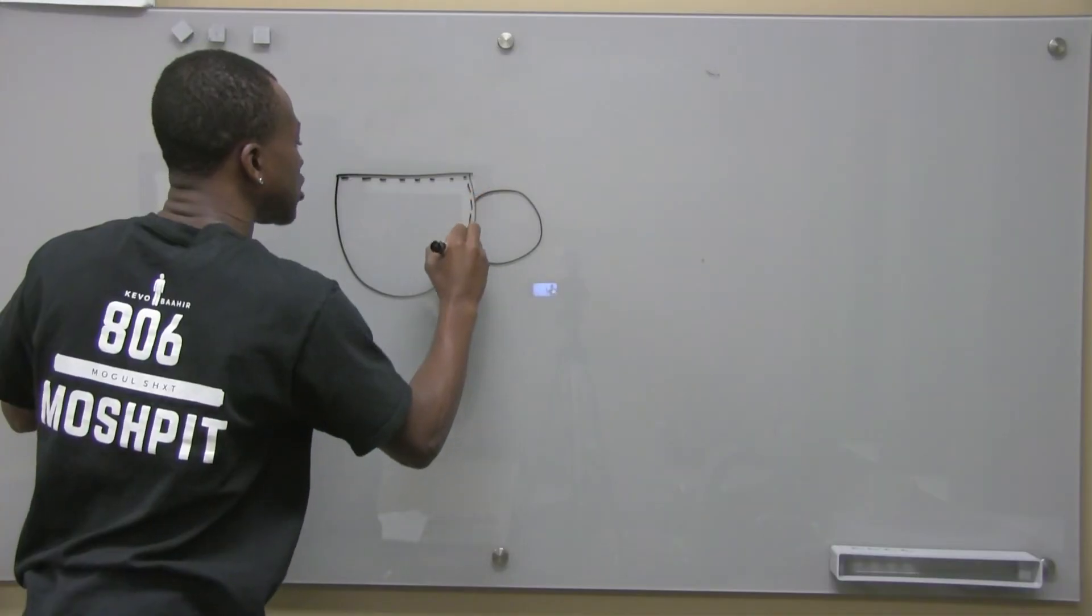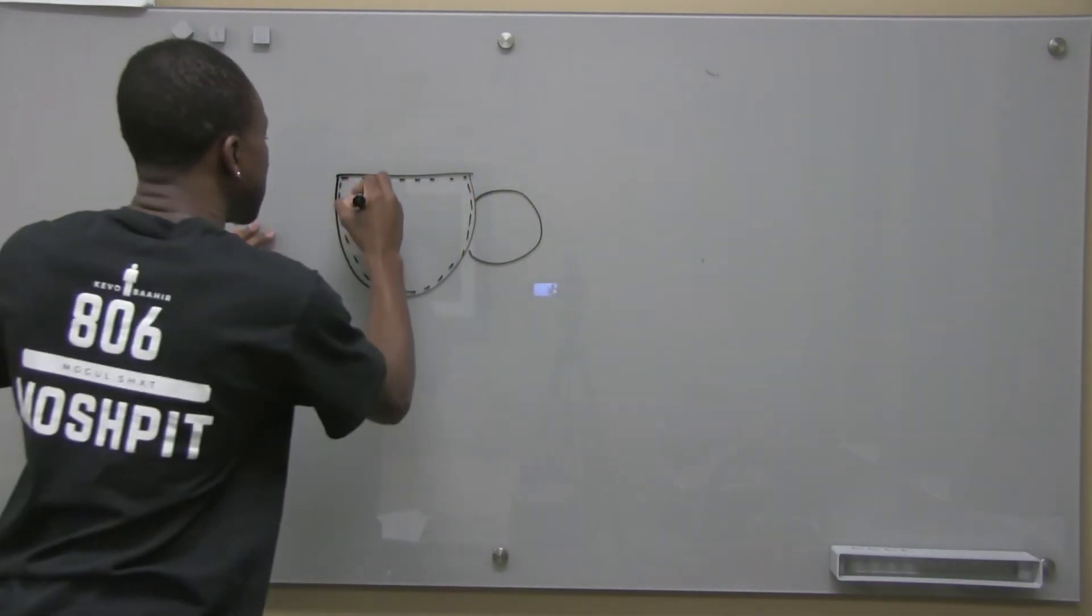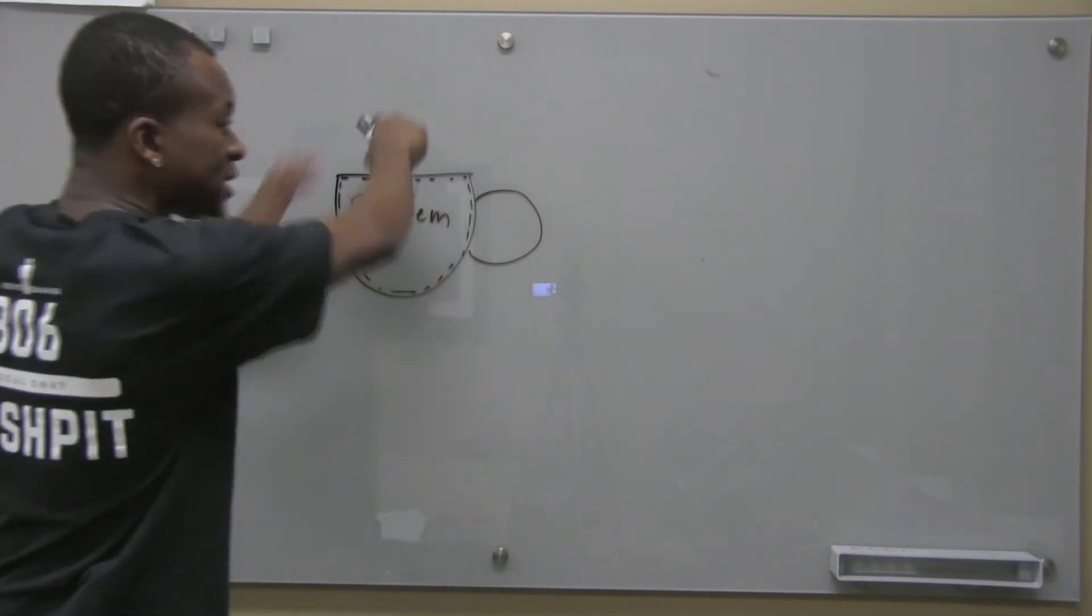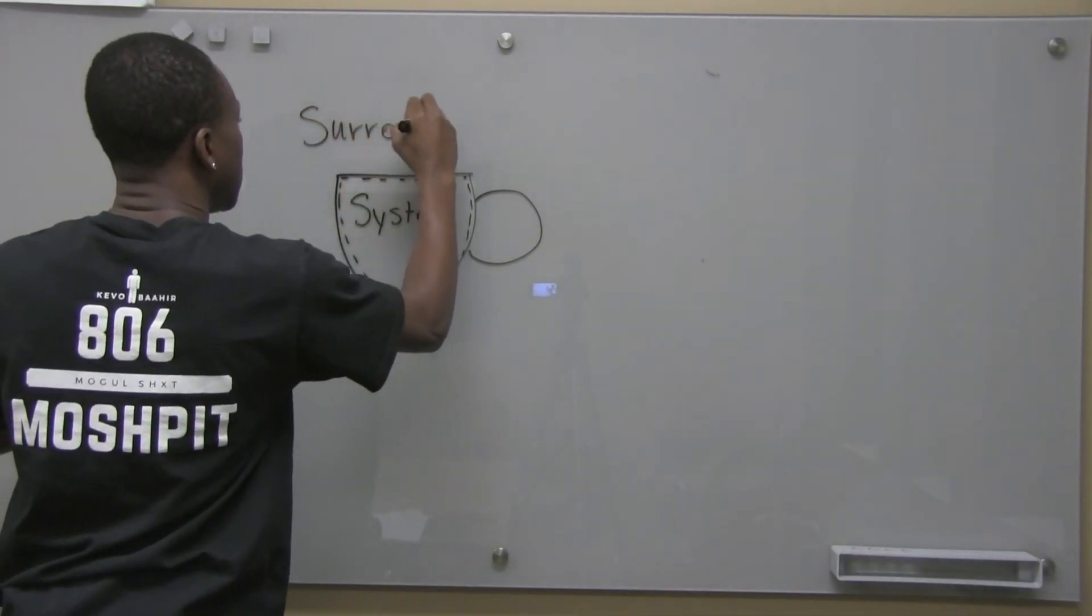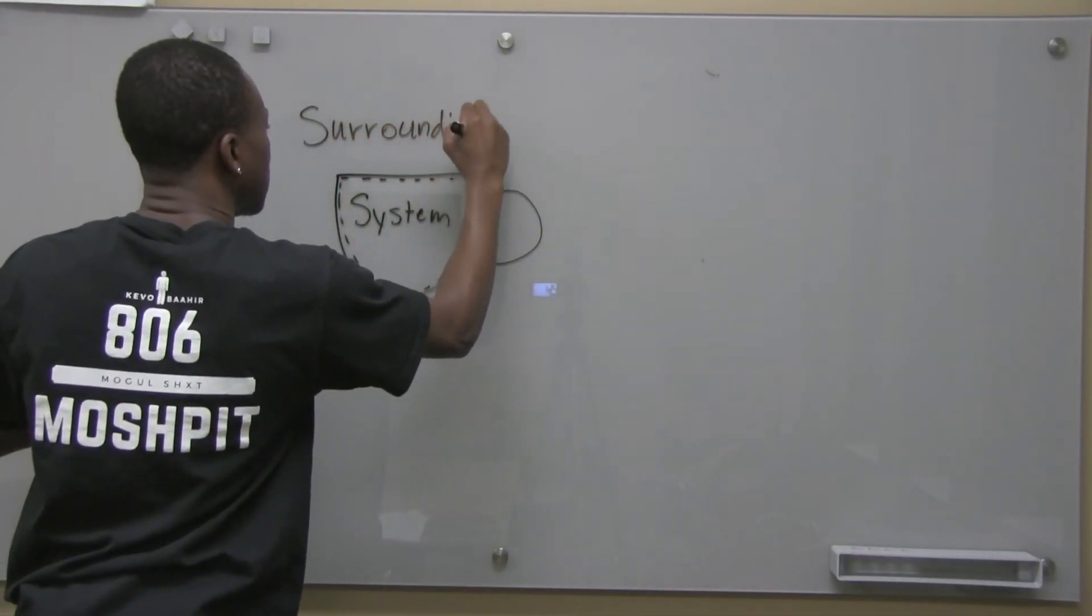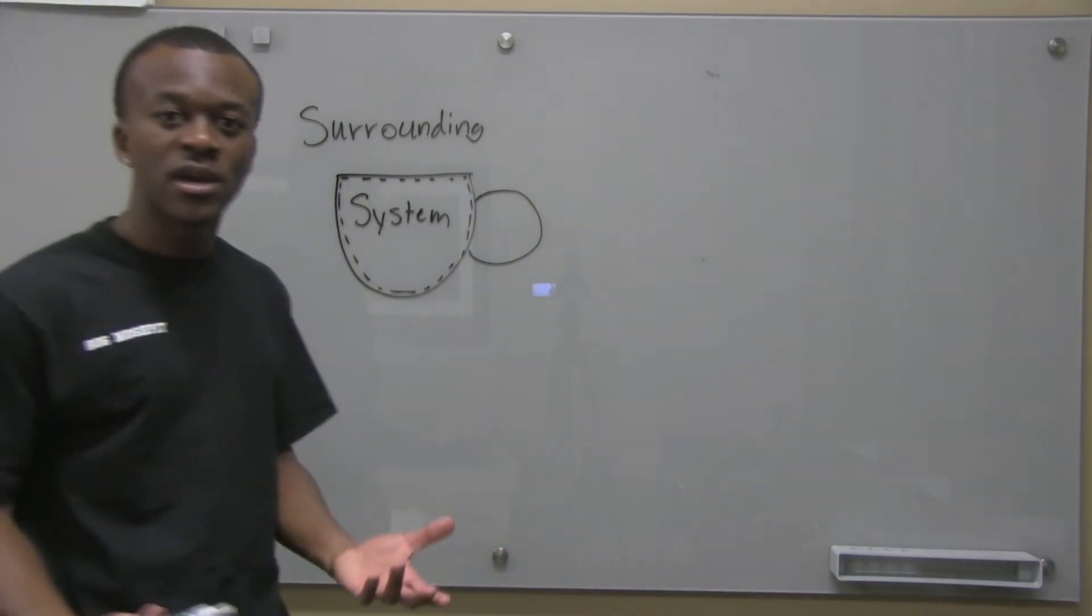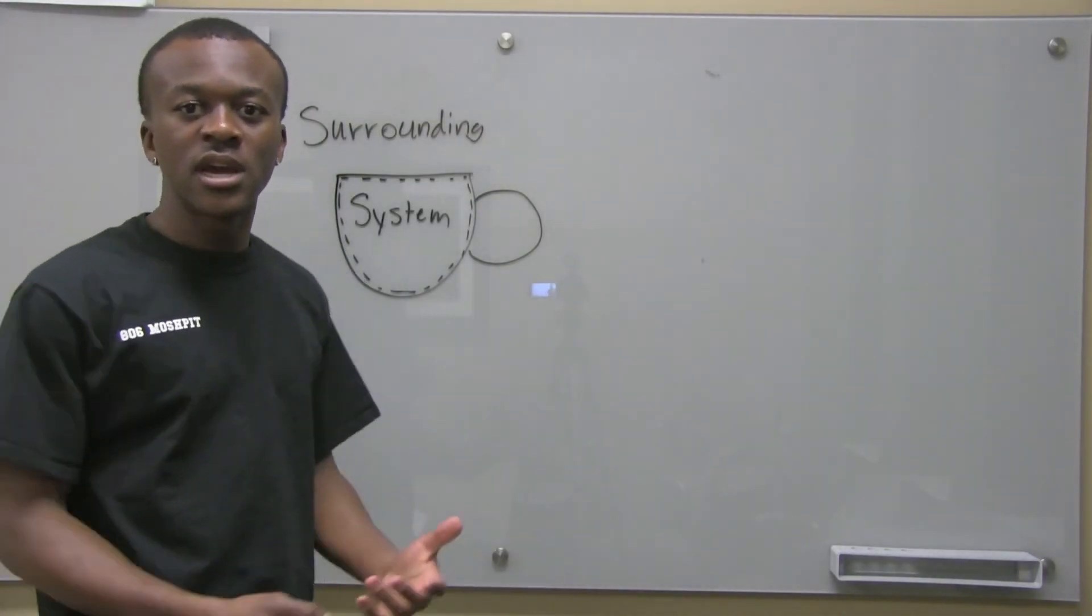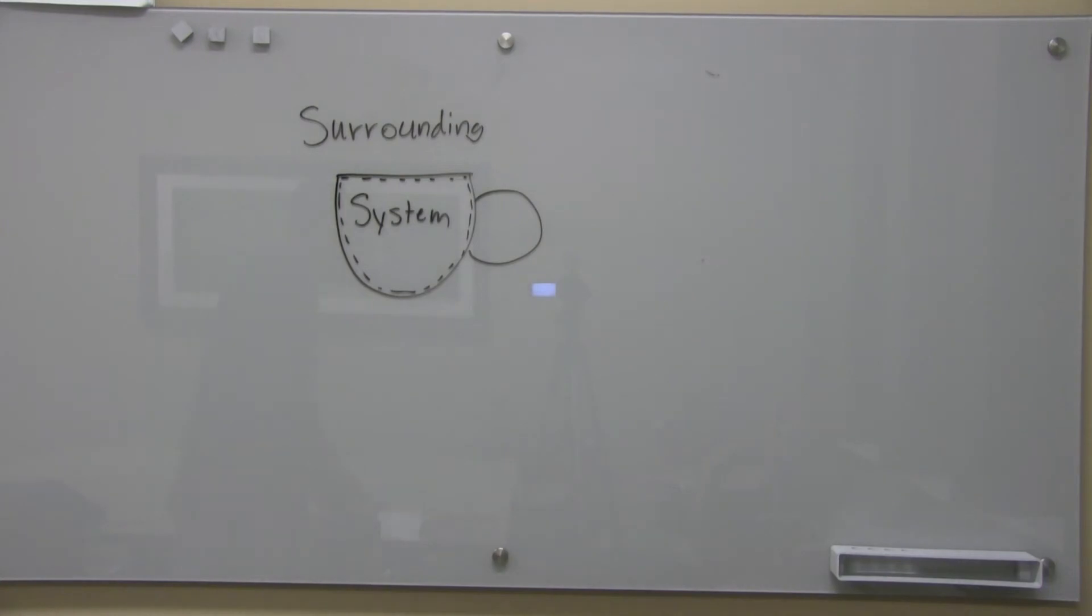Now generally you might see us denote a system like this. So I'm studying everything that's going on inside the coffee cup. This is the system, and everything around it are the surroundings. Now what separates the system from the surroundings is something called a boundary. Just as we know in English, a boundary separates the system from its surroundings.